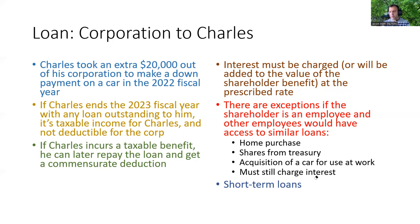This has to be done with careful tax advice. And then we do have a short-term loan provision — maybe Charles takes that money out early in 2022 to buy the car, knowing he's going to repay it by later in the year. You can take that short-term loan and not pay any tax on it as long as you repay it by that year-end. Some people treat their corporation like a little savings account, and it can be done — but be careful and make sure your tax advisor knows what you're doing.